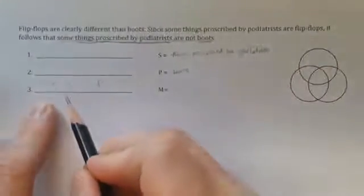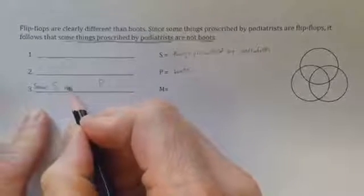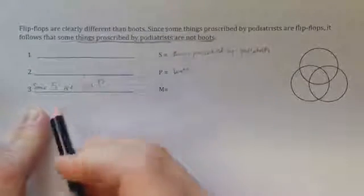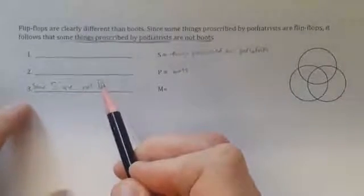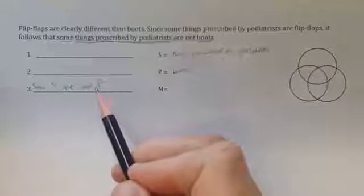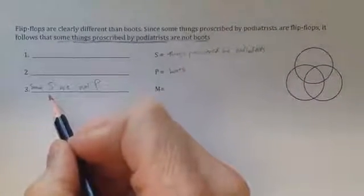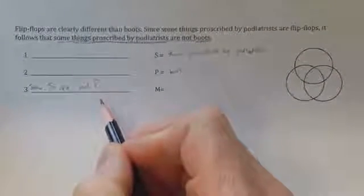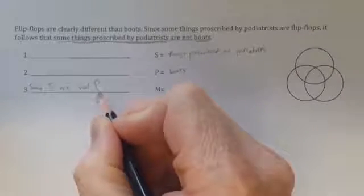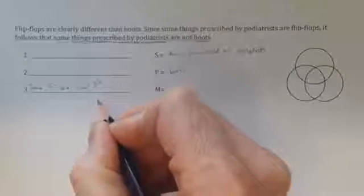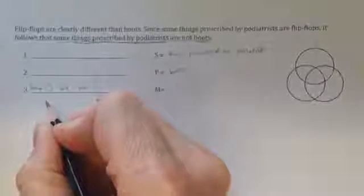So the conclusion is some S are not P. That's how I would write the conclusion in its standard propositional form. Now that we know what the subject and the predicate of the conclusion are, we know what the major and the minor term is. P, the predicate of the conclusion is always the major term, and the subject of the conclusion is the minor term.